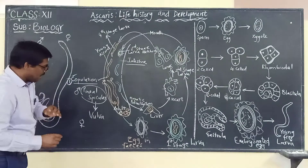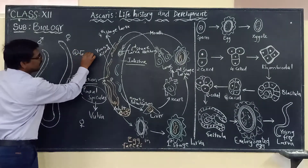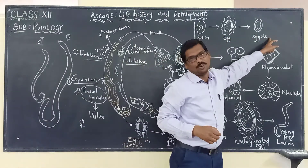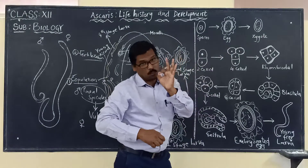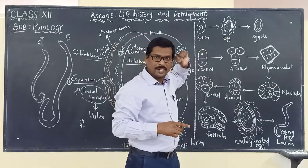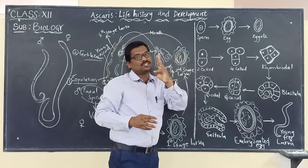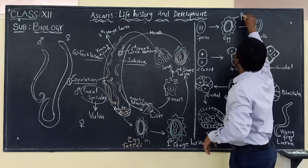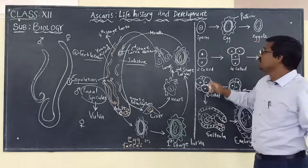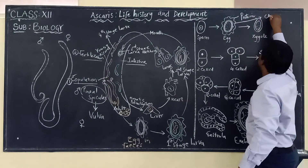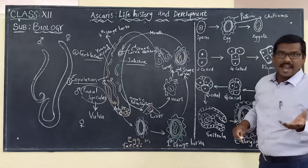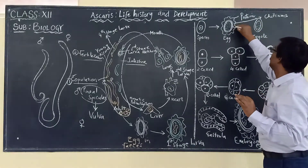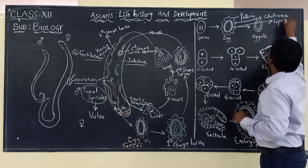So the first step is copulation and the second step is fertilization. The egg is enclosed and covered by three layers: the outermost layer is the protein coat, the middle layer is the chitinous layer, and the innermost layer is the lipid layer.